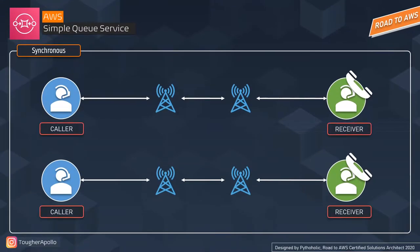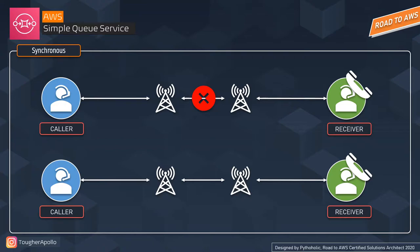There is also synchronous communication, like a caller making a phone call to a receiver. For synchronous communication, there must be a user who is active all the time listening to messages. The problem here is that if the connection breaks due to any technical issue, users will not be able to communicate — and that's where we mostly rely on asynchronous messaging.